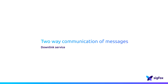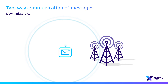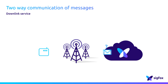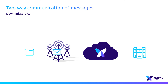For bidirectional messages, there's a major difference. Customers cannot contact their object directly. The communication is always initiated by the object. The object can request a downlink message whenever it sends a message. If a downlink has been requested, when the message arrives at the customer's server, the customer can reply to this message. If the customer has replied, the reply message — the so-called downlink message — is forwarded to the object by the Sigfox network.